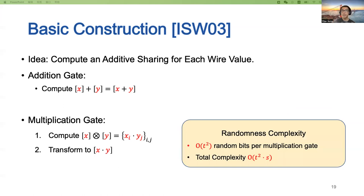The problem is reduced to evaluating addition gates and multiplication gates. For addition gates, we simply add up the two input additive sharings. For multiplication gates, we first compute the multiplication between every two shares, one from each input additive sharing. The summation of these n² multiplication results equals X·Y. We then transform the multiplication result to an additive sharing of X·Y. The ISW03 construction requires O(T²) random bits for each multiplication gate, resulting in O(T²·S) randomness complexity.